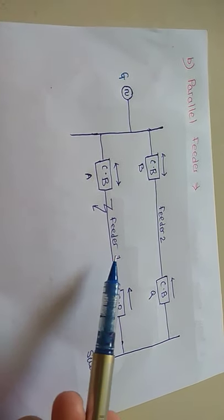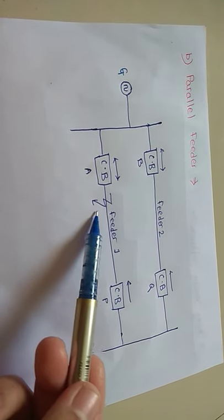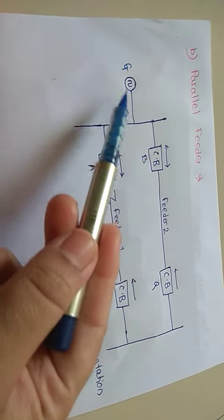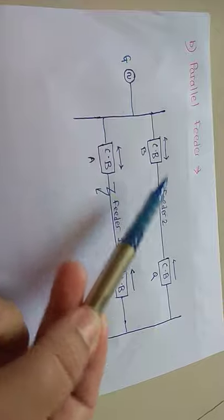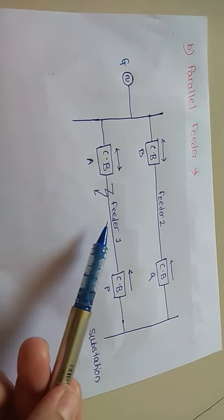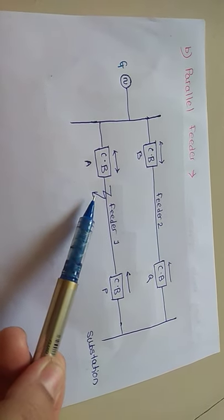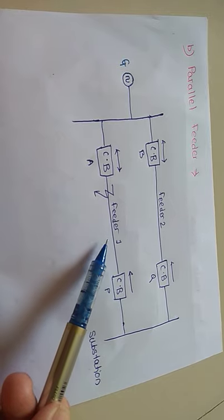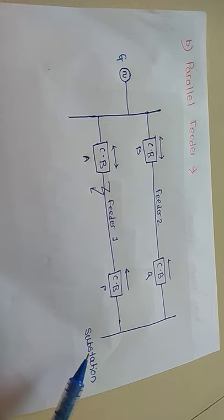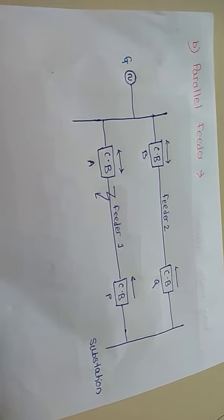Suppose there are two feeders — feeder 1 and feeder 2 — connected in parallel. Suppose a fault occurs on feeder 1; this feeder can be taken for maintenance purposes, while the continuity of supply can be maintained from feeder 2, i.e., from the generator, feeder 2, and the substation. This is one advantage of the parallel feeder, where continuity of supply can be maintained.